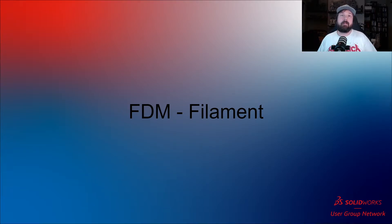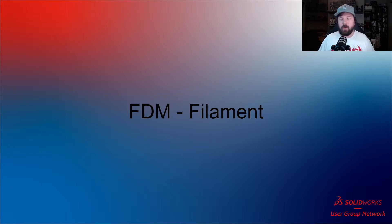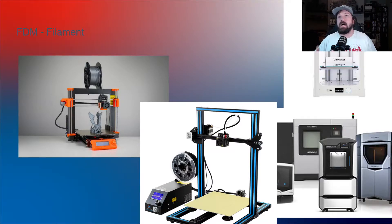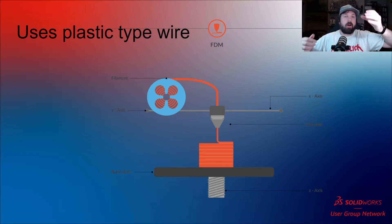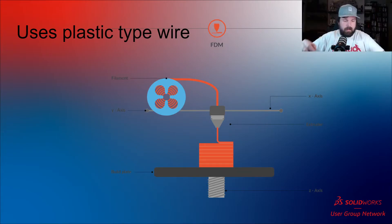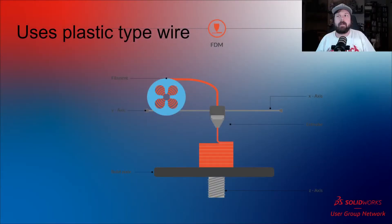We'll talk about FDM — filament. This is the most common type of 3D printing that exists. You've got your Prusas, your larger Stratasys and Ultimakers — quite a wide variety of machines that essentially do the same thing. They use a plastic wire as their material. Imagine a hot glue gun attached to a CNC head: the wire pushes through into the hot end and forces material out, and the CNC head precisely places where that material should be. That's FDM 3D printing.